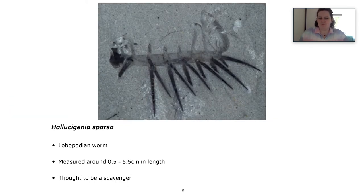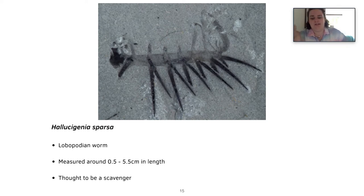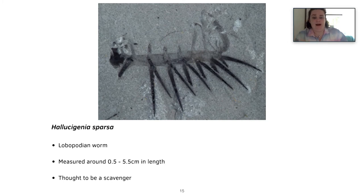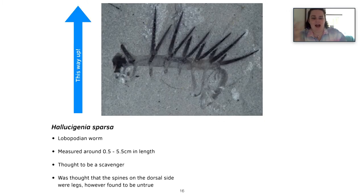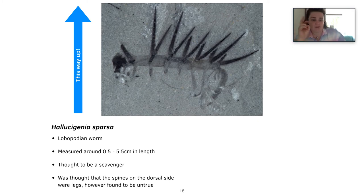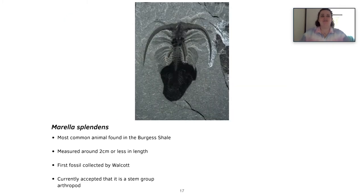The second weird fossil is Hallucigenia sparsa. This is a lobopodian worm — we have only recently come to that conclusion. It measures around 0.5 to 5.5 centimeters in length and is thought to be a scavenger. It was originally described as walking on its spines with the tentacles above acting as a feeding apparatus. However, it was found that we had interpreted it upside down — the tentacles were actually a row of legs, so the spines were not legs at all. They're weird animals and I love them.